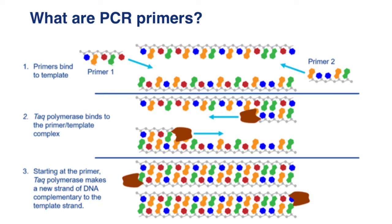RNA primers we can find in living organisms, and our polymerase uses RNA primers to extend new strands of DNA when, for example, a cell undergoes a replication cycle. But as I said, for certain applications in PCR, we can also use RNA-based primers.